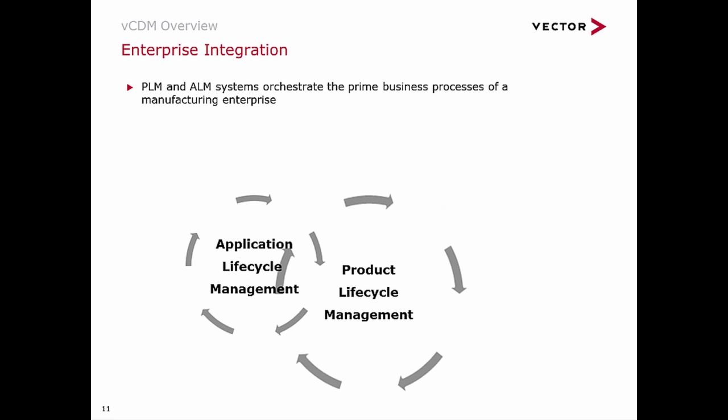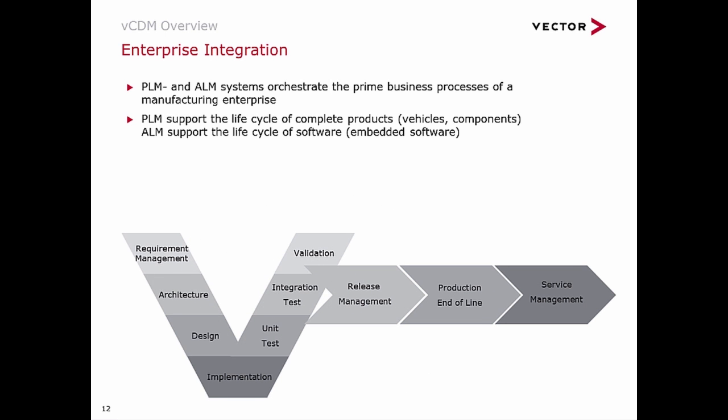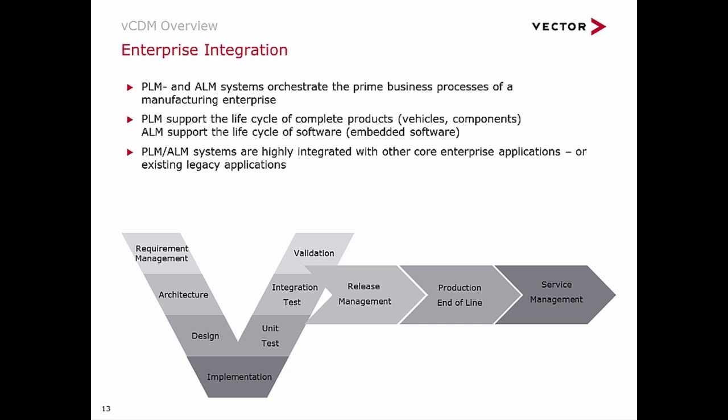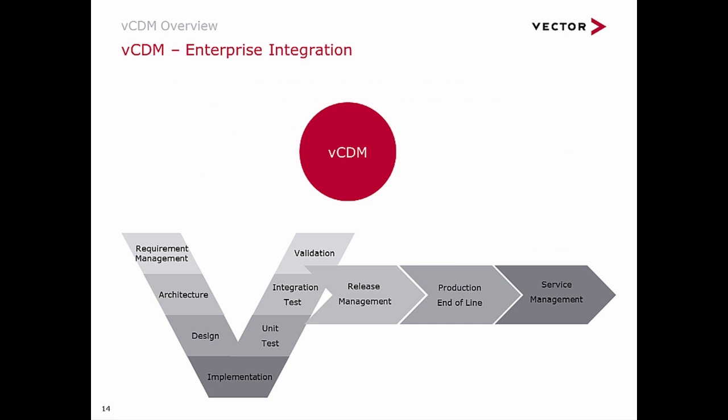Product lifecycle management and application lifecycle management systems orchestrate the prime business processes of a manufacturing enterprise. PLM systems support the lifecycle of complete products, typically vehicles or components, while ALM systems support the lifecycle of embedded software. PLM and ALM systems are highly integrated with other core enterprise applications and legacy systems. VCDM integrates directly with every single step of ALM and PLM.